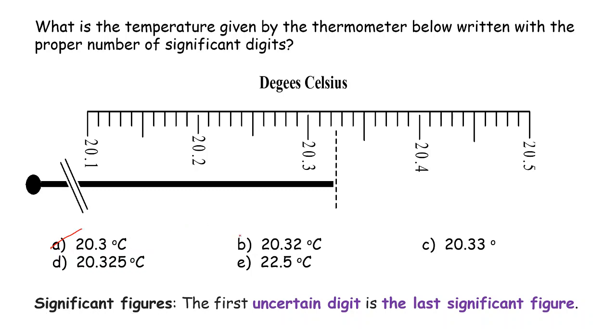How about B then? Okay, 20.32. Where is 20.32? This is 20.3, this is 20.31, and that is 20.32. Again, we can read this certainly, which means this digit is also certain.